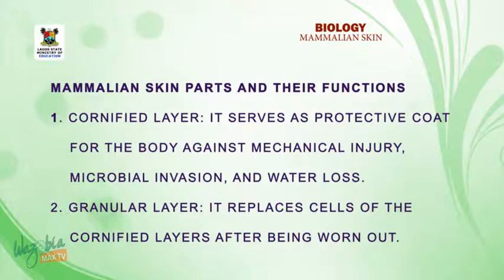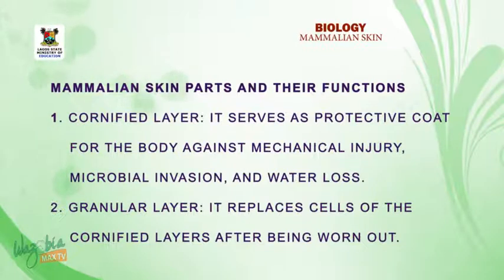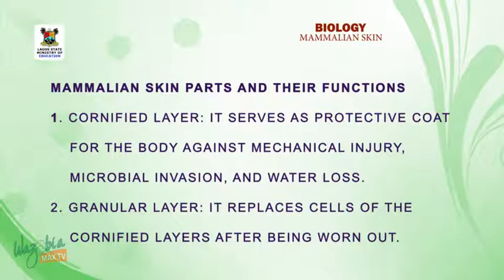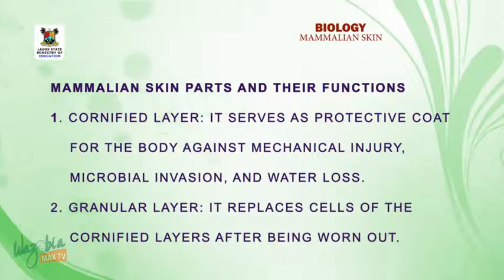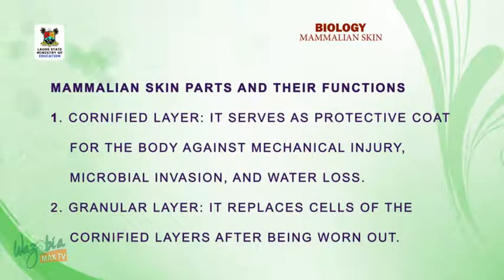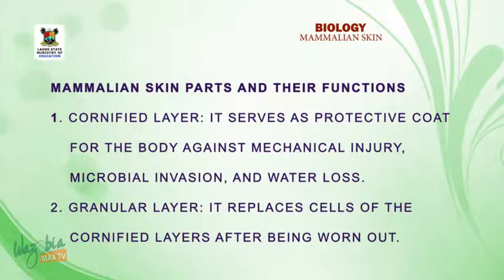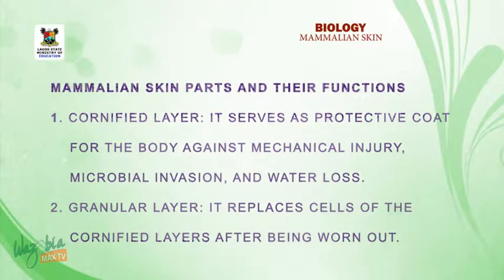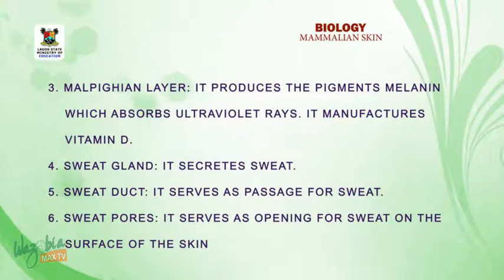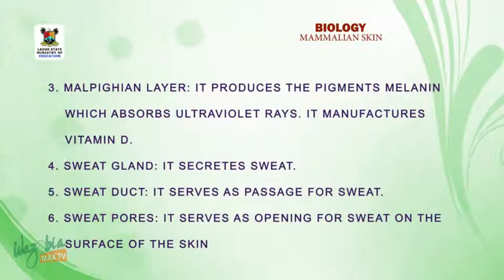Let's now look at the mammalian skin parts and their functions. The cornified layer serves as a protective coat for the body against mechanical injury, microbial invasion, and water loss. The granular layer replaces cells of the cornified layer after they are worn out. The Malpighian layer produces the pigment melanin, which absorbs ultraviolet rays.